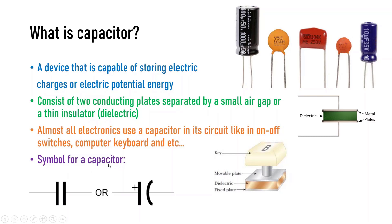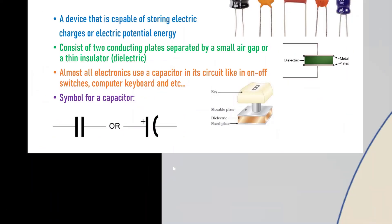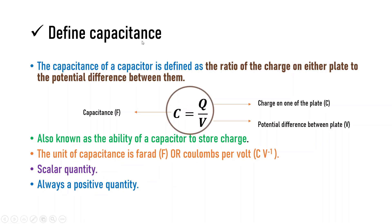This is the symbol for a capacitor — we have this one or this one. The first learning outcome is to define capacitance. The capacitance of a capacitor is defined as the ratio of the charge on either plate to the potential difference between them. By equation, C equals Q over V, where C is the capacitance in farads, Q is the charge on one of the plates in coulombs, and V is the potential difference between the plates in volts. Capacitance is also known as the ability of a capacitor to store charge, and the unit is farads or coulombs per volt. Capacitance is a scalar quantity and always a positive quantity.